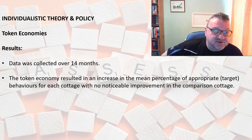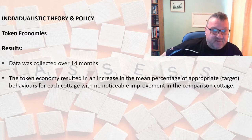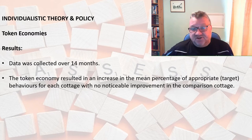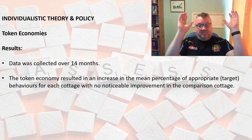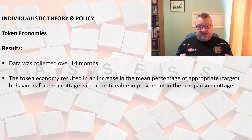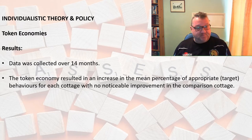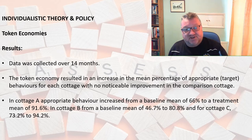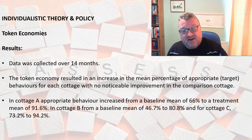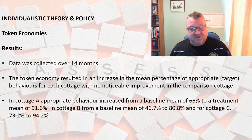The token economy resulted in an increase in the mean percentage of appropriate behaviour for each cottage. There was no noticeable improvement in the comparison cottage where token economy wasn't happening. In cottage A, appropriate behaviour increased from 66% to 91%; in cottage B, from 46% to 80%; and in cottage C, from 73% to 94%. A massive improvement in acceptable behaviour.